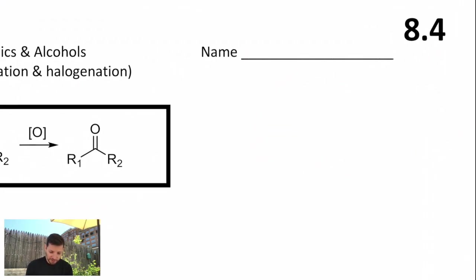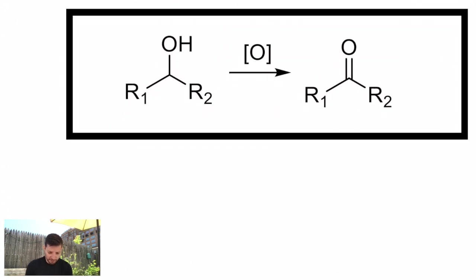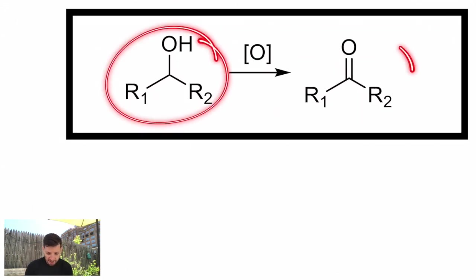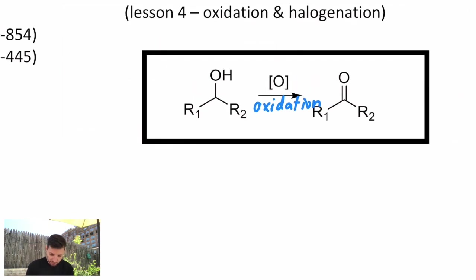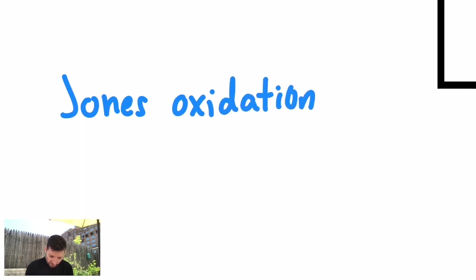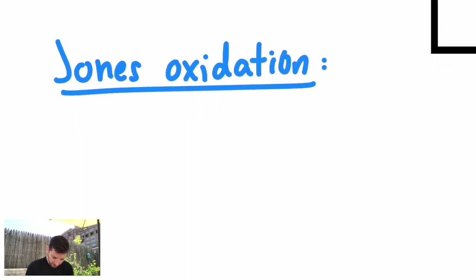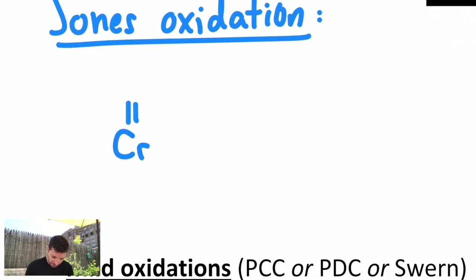A common reagent for doing this, there's an example on your notes already, there's a secondary alcohol turning into some ketone, with just the generic symbol for oxidation, that's what that symbol means. And one of the most common ones for doing this is a chromium-based oxidation called the Jones oxidation, which involves chromium oxide.